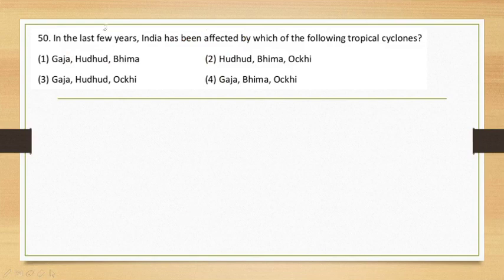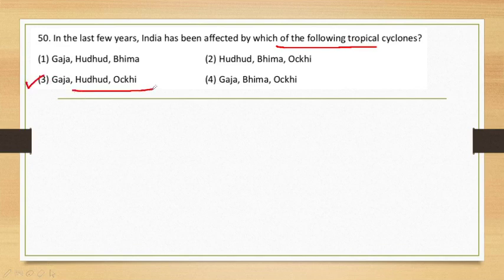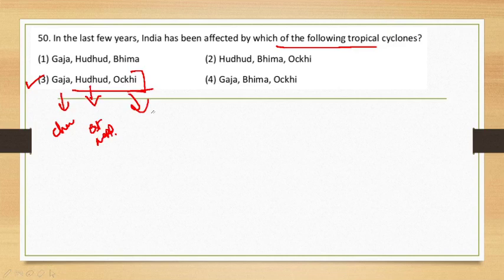The last question: In the last few years, India has been affected by which of the following tropical cyclones? I googled it — Gaja, Hudhud, and Ockhi are three cyclones which have been in India in previous years. Gaja was from Chennai, and Ockhi was from north India. This was our June 2019 morning shift exam discussion.